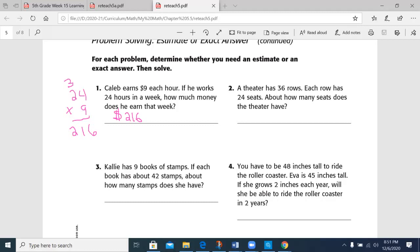All right, let's do one more together. Theater has 36 rows. Each row has 24 seats. About how many seats does the theater have? So we have about. We know that there is 36 rows, and each row has 24 seats. So I'm going to multiply, but first I'm going to estimate.